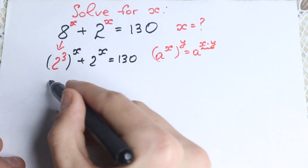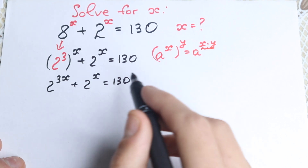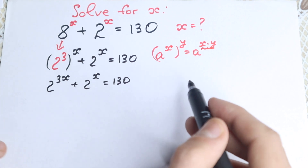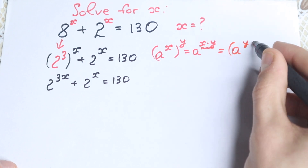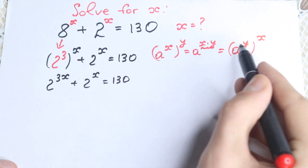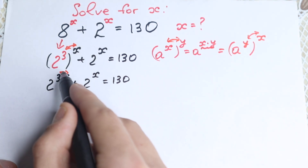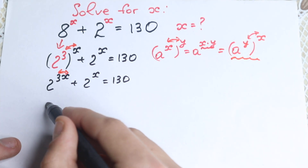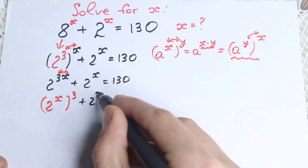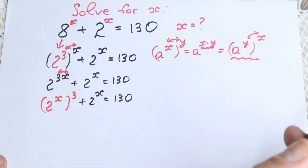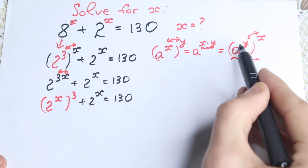Let's multiply 3 times x, so we will have 2 to the power 3x, plus 2 to the power x, equals 130. I want to mention one really interesting moment about this rule: because of this multiplication we can easily swap these powers. So in our case we can swap x and 3, and write it as 2 to the power x, raised to the power 3, plus 2 to the power x, equals 130. Of course we don't strictly need this step, but I want to learn and remember this rule — we can easily change these powers.